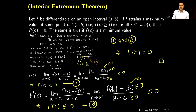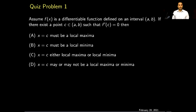This completes the proof of the theorem. You can also use the case where f(c) is the minimum value and run a parallel argument to prove that f′(c) = 0. Next, I have one quiz problem for you to practice. Please pause the video for one to two minutes and work on this problem. This is also the end of this video. Thank you very much for watching. I will see you in the next video. Bye for now.